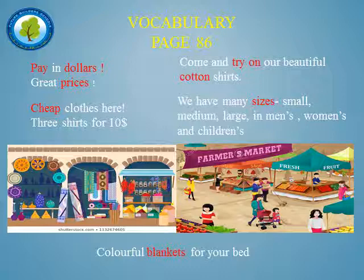The word 'price' means ثمن. Number two: 'colorful blankets for your bed' — the word 'blankets' means بطانية — a colorful blanket, ملونة بطانية. 'Come and try on our beautiful cotton shirt.' 'Try on' means to put on an article of clothing in order to judge its appearance. And 'cotton' means قطن.